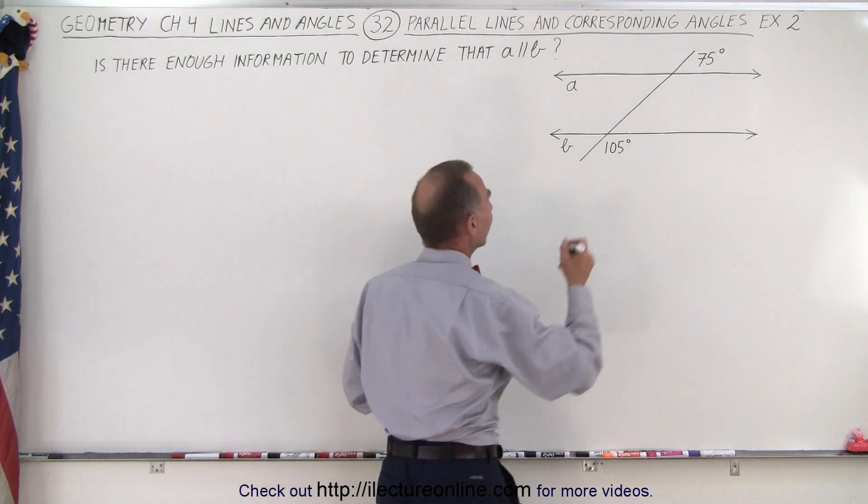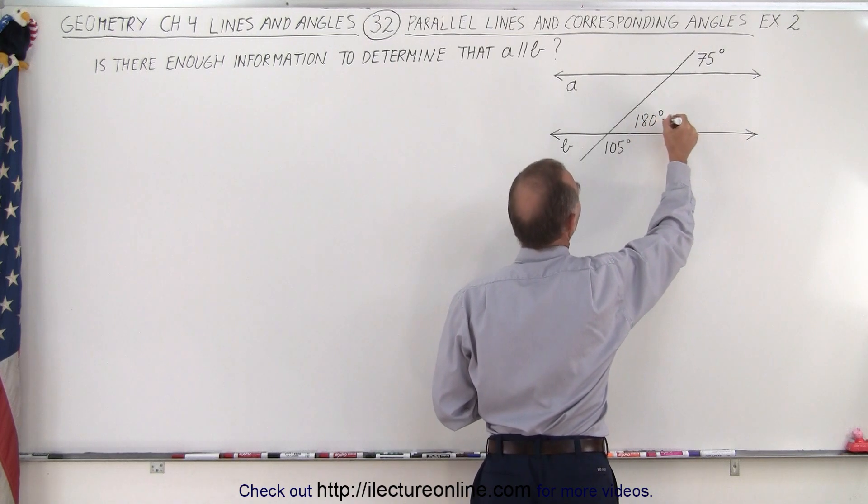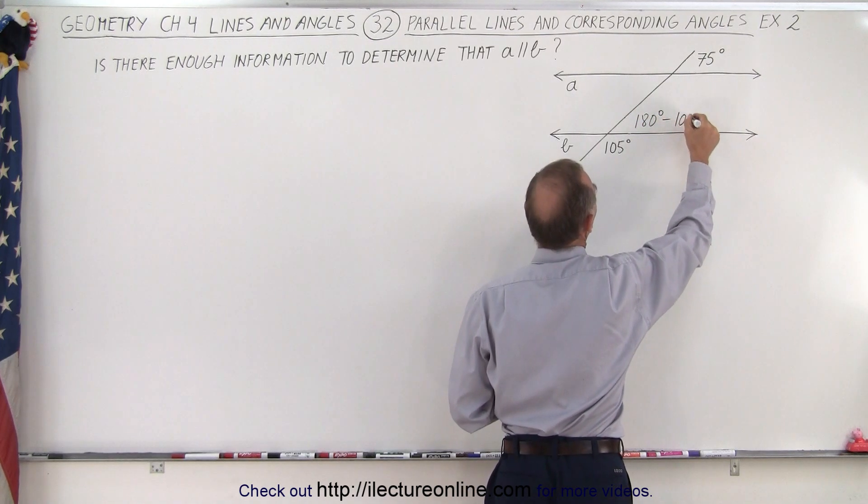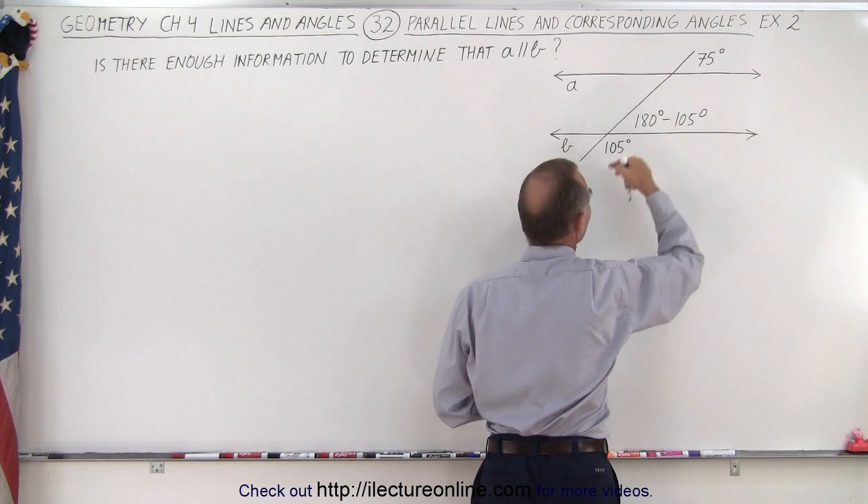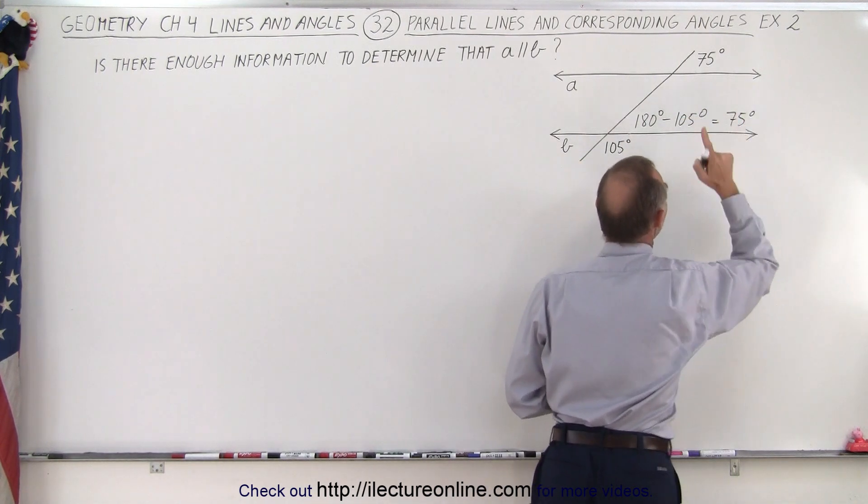So therefore we can say that this angle right here must be 180 degrees minus this angle, 105 degrees, because we know that they add up to 180 degrees. So this is equal to 75 degrees.